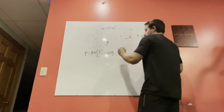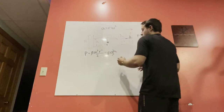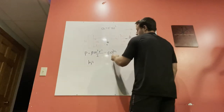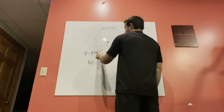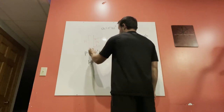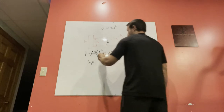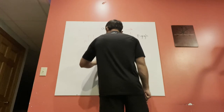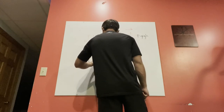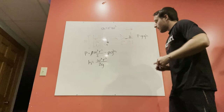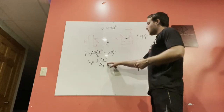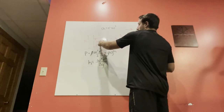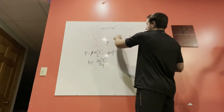Taking downward as positive to avoid sign issues, we solve for h. The densities cancel, giving: h = ω²·r²/(2g). This expression describes the changing height at any given radius.